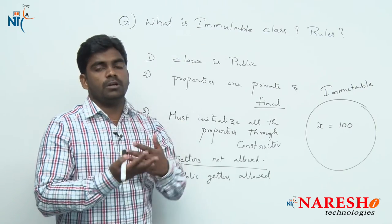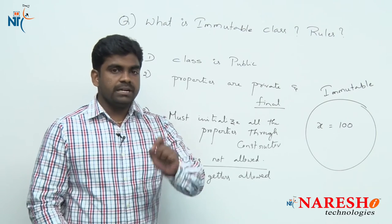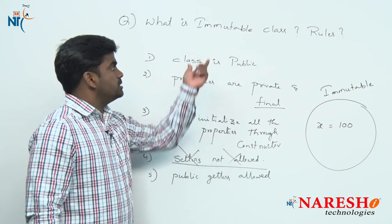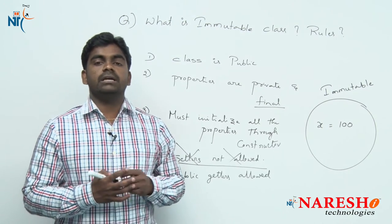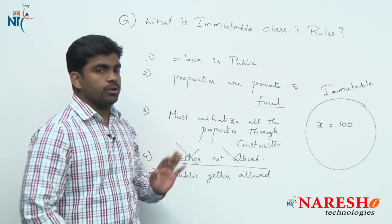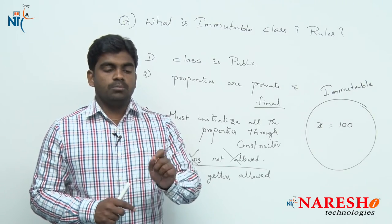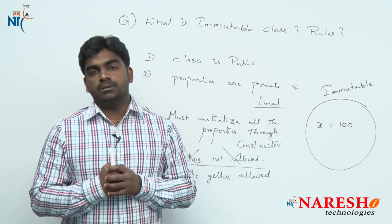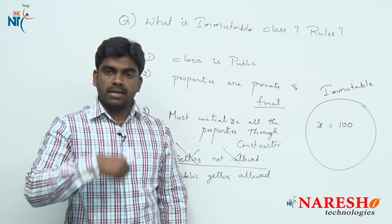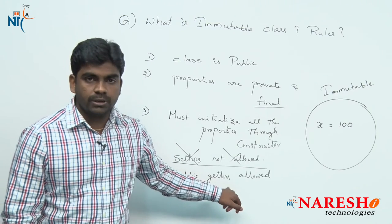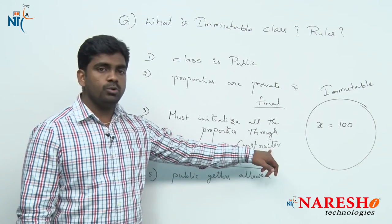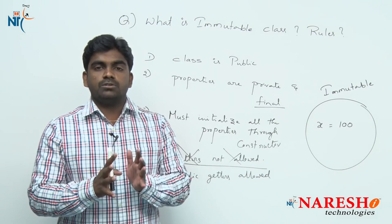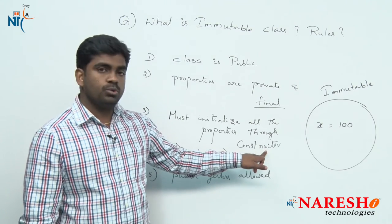The concept is: an immutable object means once you set any value, you cannot modify it. Setters are not allowed; only getters are allowed. So this is what an immutable object is and how we create an immutable class. The variables are final and private, so you cannot access them directly — only through getter methods. Initialization is only through the constructor; later you cannot set the value because setters are not there. In the process of object creation only, you can set the values through the constructor.